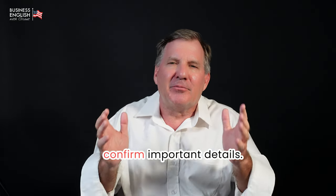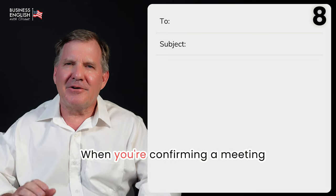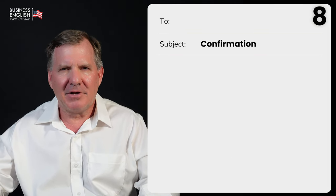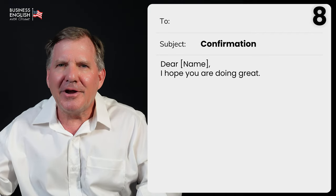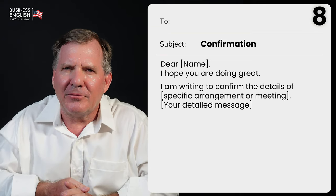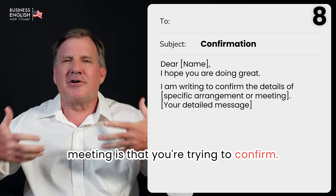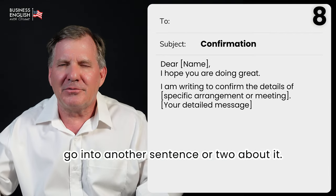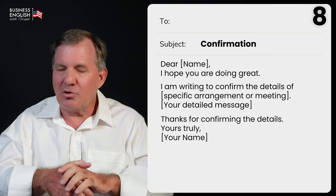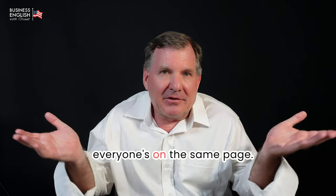Now let's look at how to confirm important details. Number eight, here's an email format for confirming a meeting or event. Beginning: 'Dear John, I hope you're doing great.' Content: 'I'm writing to confirm the details of [specific arrangement or meeting],' then add another sentence or two. Finish: 'Thanks for confirming the details. Yours truly, Grant.' Confirming details makes sure everyone's on the same page.